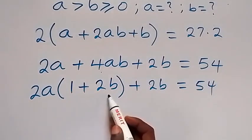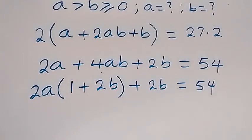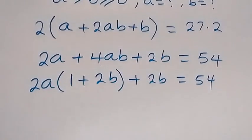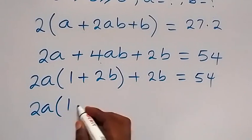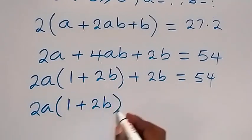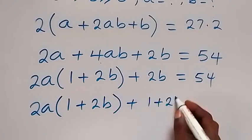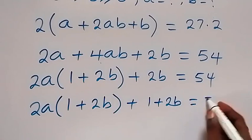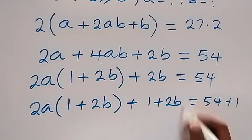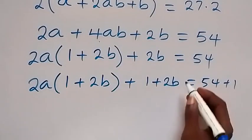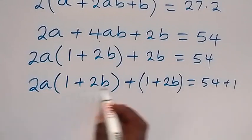We can also have (1 plus 2b) from the remaining term by adding 1 to both sides. This now becomes 2a times (1 plus 2b) plus (1 plus 2b) equals 55, since we added 1 to both sides to balance the equation.